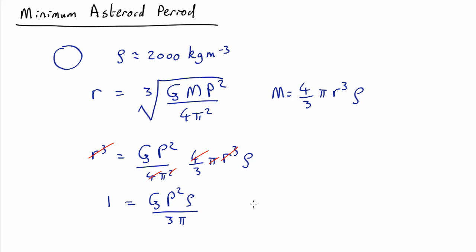So, the period is going to be equal to the square root of 3 pi over g rho.